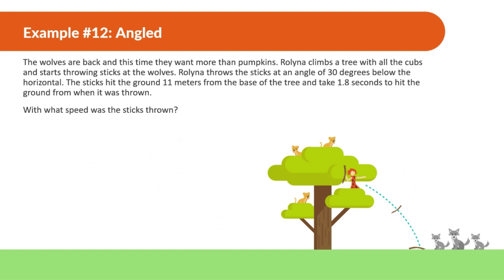The wolves are back, and this time they want more than pumpkins. Rowlina climbs a tree with all the cubs and starts throwing sticks at the wolves. Rowlina throws the sticks at an angle of 30 degrees below the horizontal. The sticks hit the ground 11 meters from the base of the tree and take 1.8 seconds to hit the ground from where they were thrown. With what speed were the sticks thrown? She's throwing at an angle below the horizontal — this would be 30 degrees.